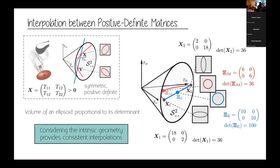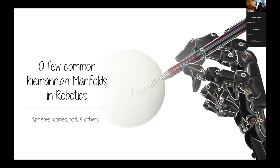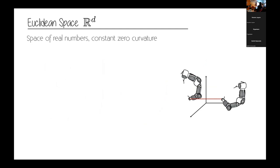I hope these two simple examples convince you of the importance of using Riemannian manifold theory for robotics. Now I would like to mention some common Riemannian manifolds that we may find in different robotic applications.